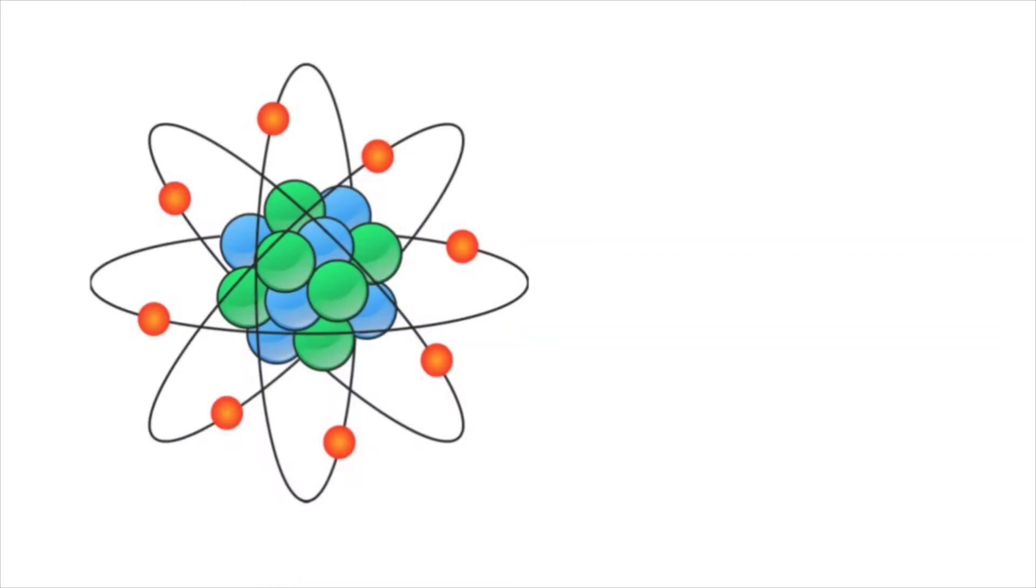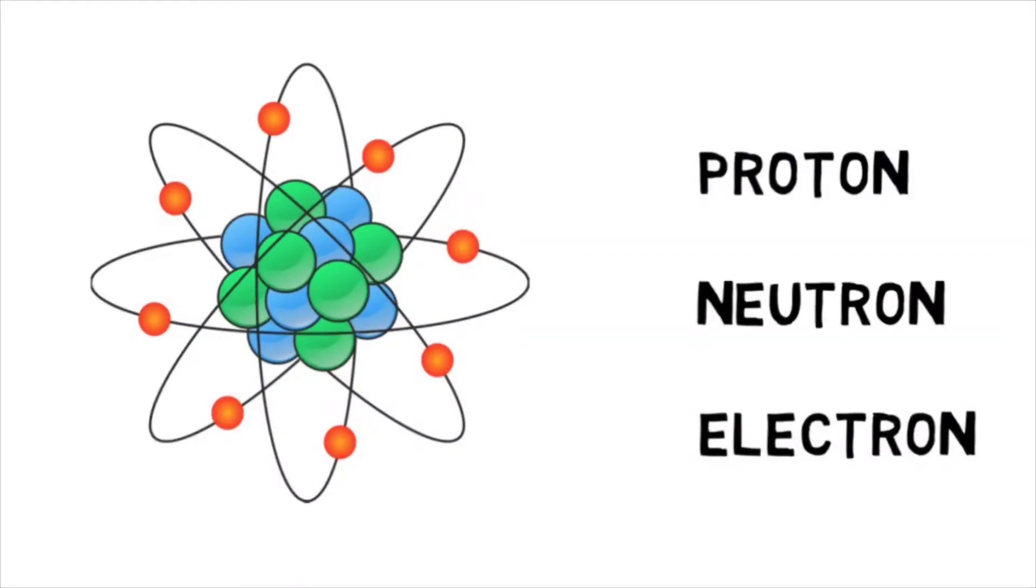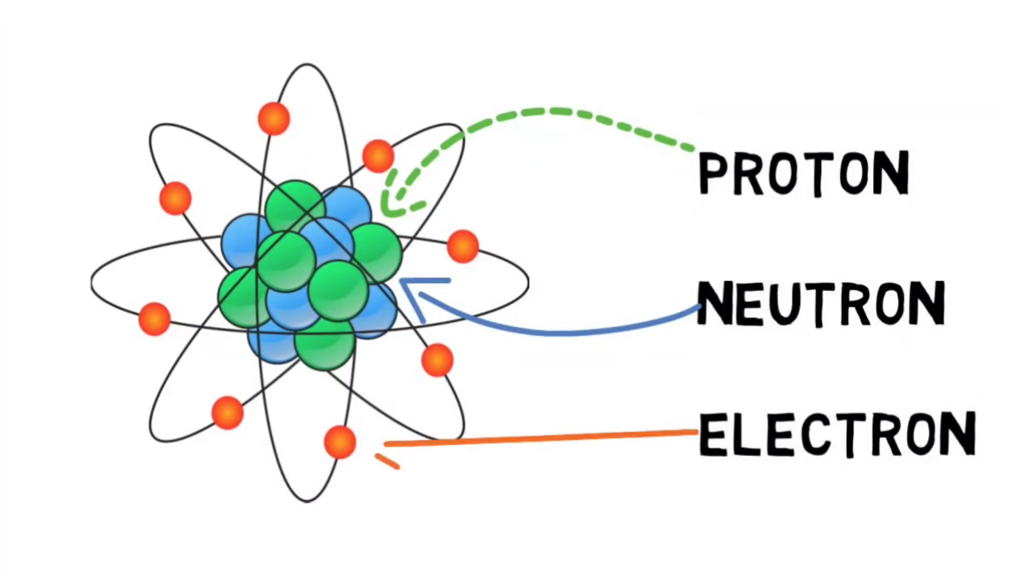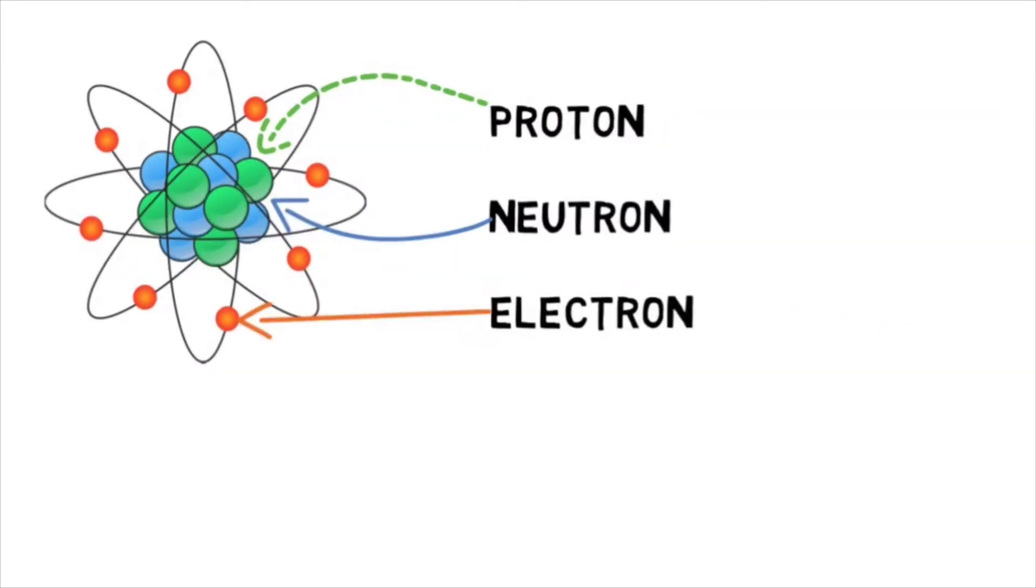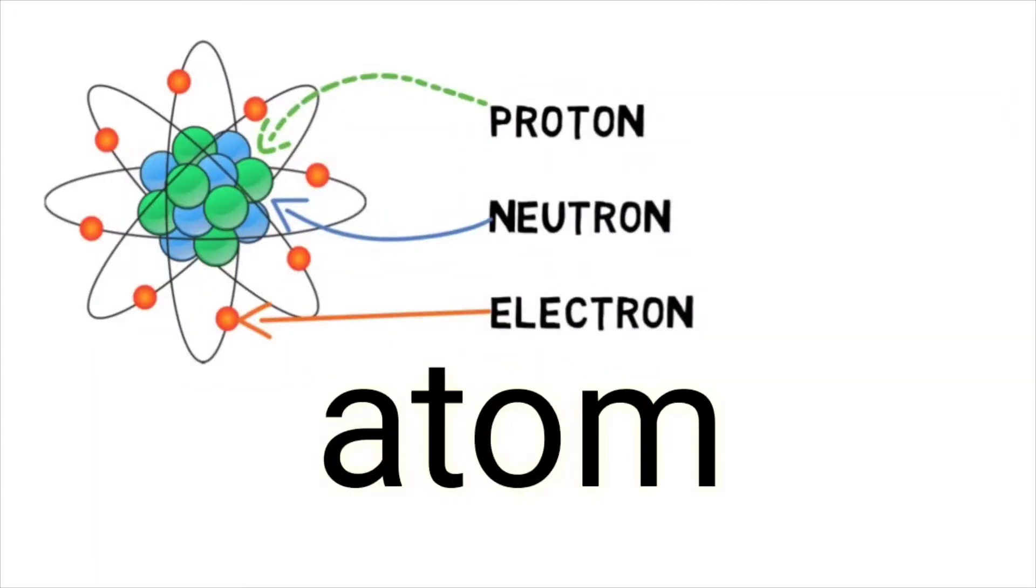One atom has three main particles: Proton, Neutron, and Electrons. Proton and Neutron are at the center. The center where the proton and neutron combine is called the nucleus. And the electrons orbit around this nucleus. If you look at the sun, the planets orbit similarly. These three particles combine to form an atom.